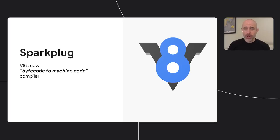The V8 team has also been hard at work squeezing even more JavaScript performance out of its engine. In addition to interpreting JavaScript, V8 compiles code on the fly for more efficient execution, and the team has implemented a whole new compiler called Sparkplug. Of course, sometimes the best way to improve code execution performance is to not execute any code at all.